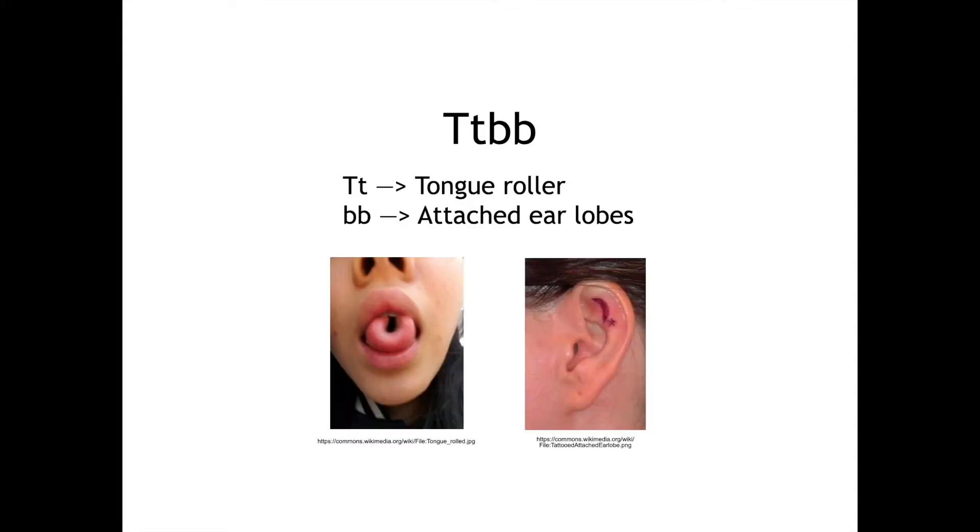So here's how you can address these problems. Question one, your capital T, lowercase t produces a tongue roller since tongue rolling was dominant, and lowercase b, lowercase b gives you the attached earlobes. So this is your phenotype, tongue roller with attached earlobes.